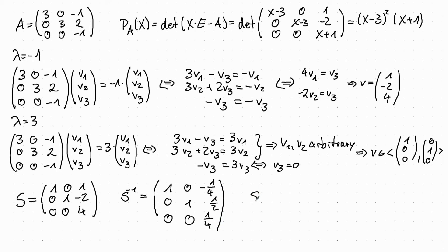And then S to the minus 1 times A times S is a diagonal matrix where the eigenvalues are on the diagonal. And since we put the eigenvectors for the eigenvalue 3 first, we have 3 here, and minus 1 as the last one since this is the eigenvector for minus 1, and the rest are zeros.